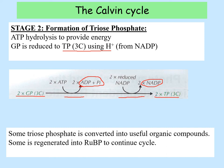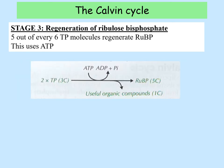Some triose phosphate is then converted into useful organic compounds, but some is regenerated into RuBP. That's where the numbers become important. Stage three is the regeneration of ribulose bisphosphate: five out of every six molecules of triose phosphate get regenerated into RuBP, and that uses ATP.